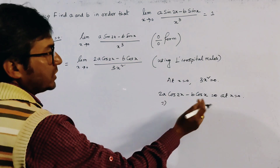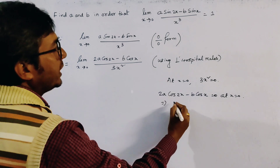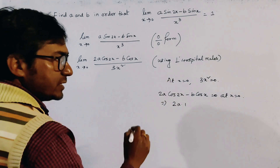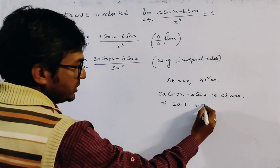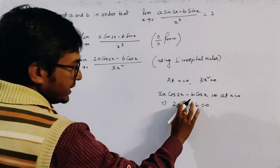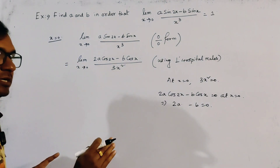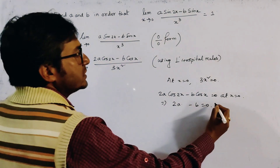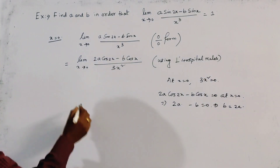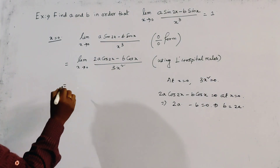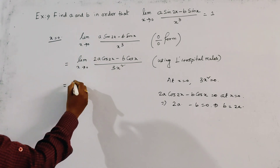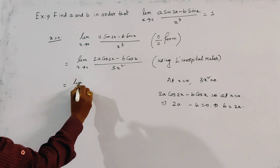Substituting x = 0, we get 2A cos(0) minus B equals 0, that is 2A times 1 minus B equals 0. This gives us the first relation: B equals 2A.